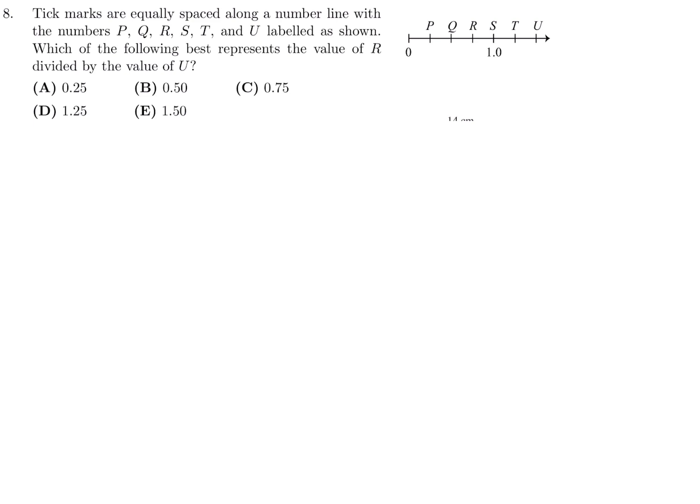So P would be 0.25. Q would be 0.5. R would be 0.75. And then T would be 1.25. And finally, U would be 1.5. So what do they want? R divided by U.